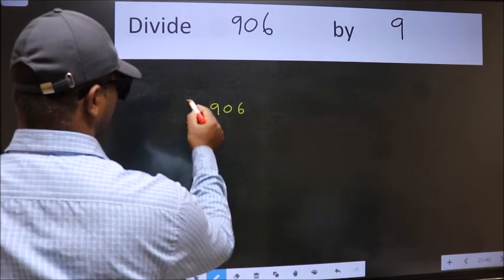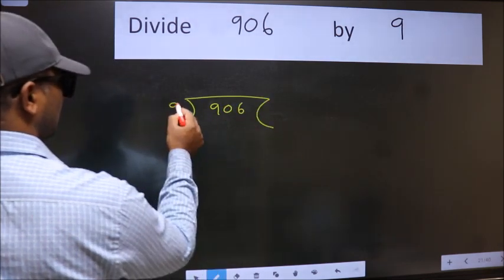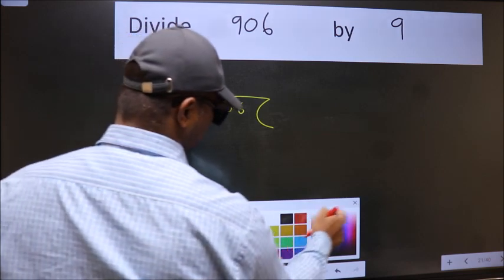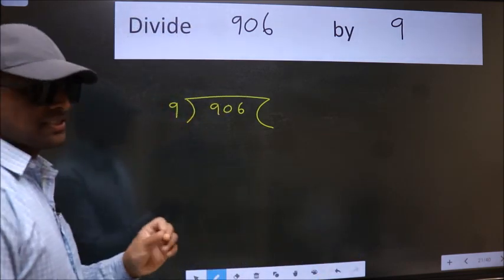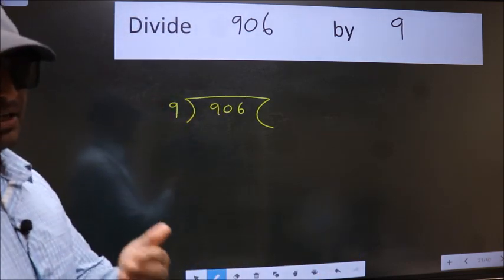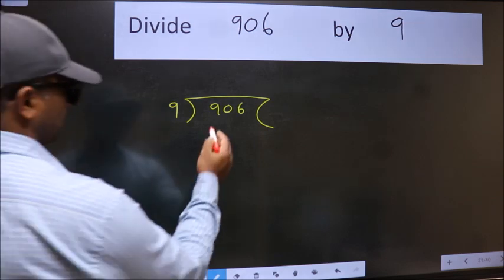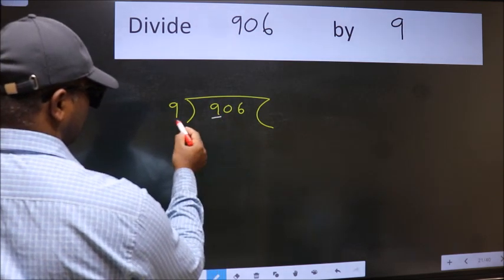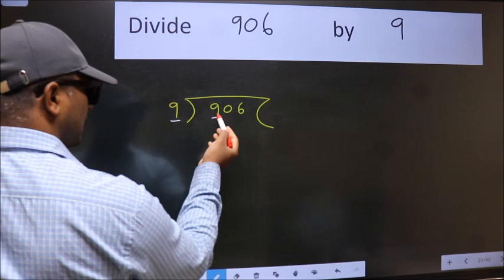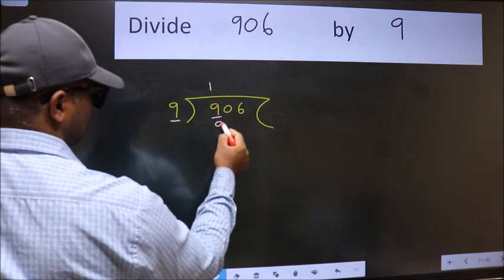906 here, 9 here. This is your step 1. Next, here we have 9 and here 9. When do we get 9 in the 9 table? 9 once, 9.